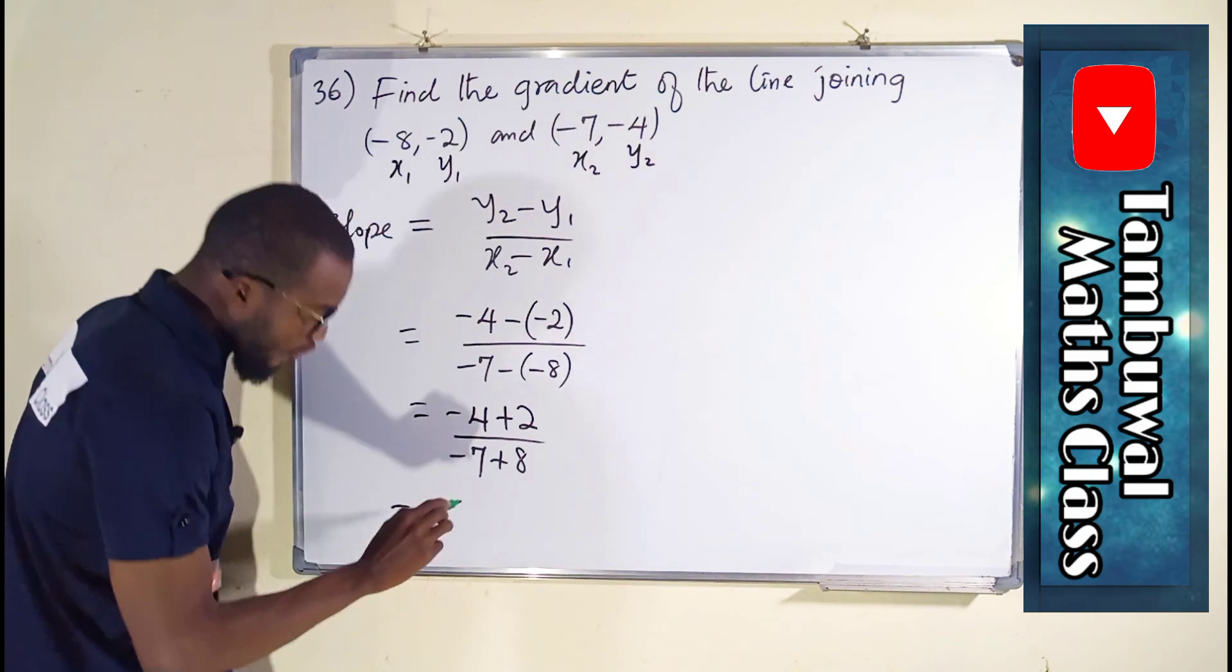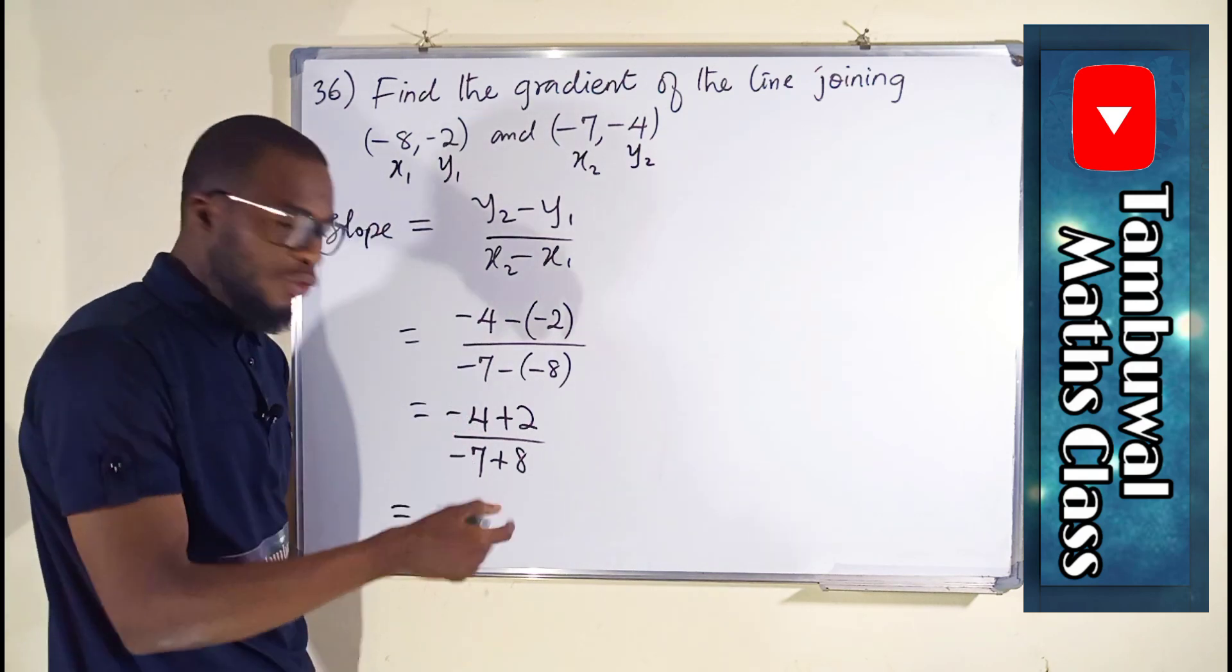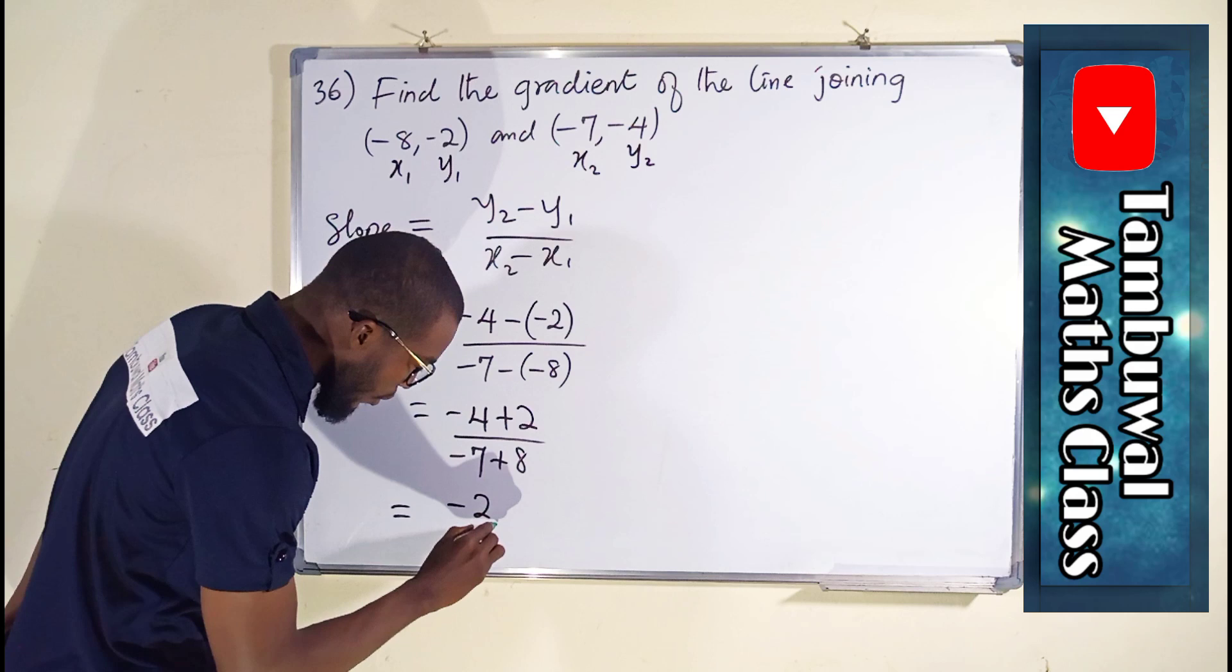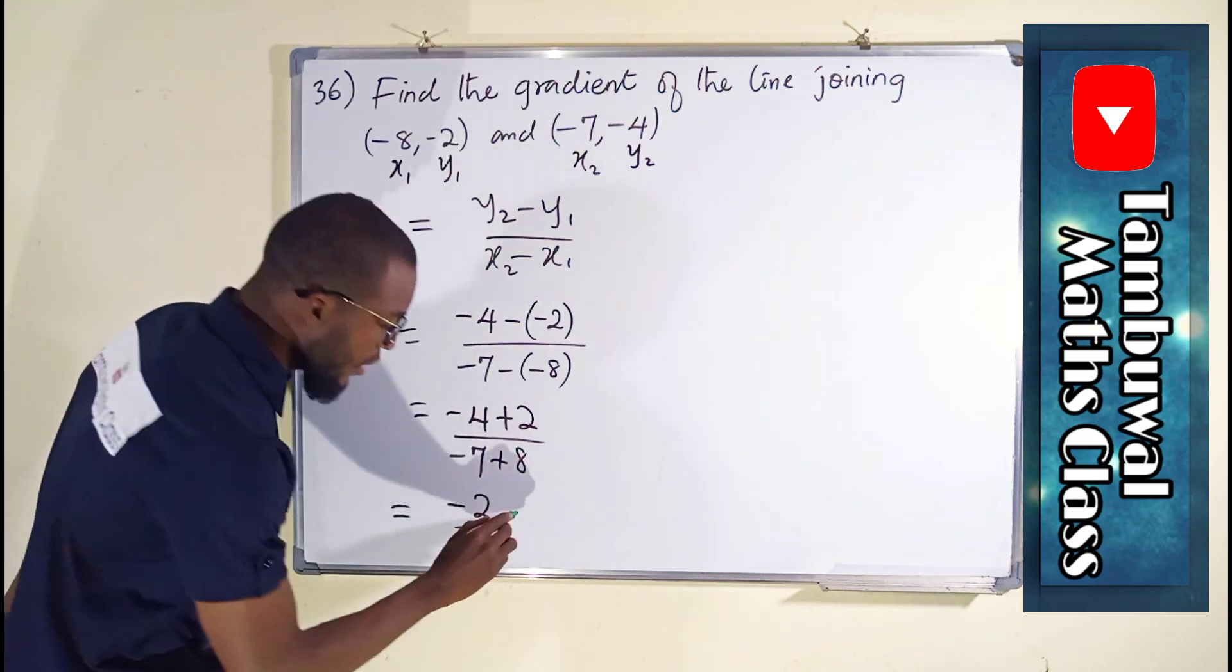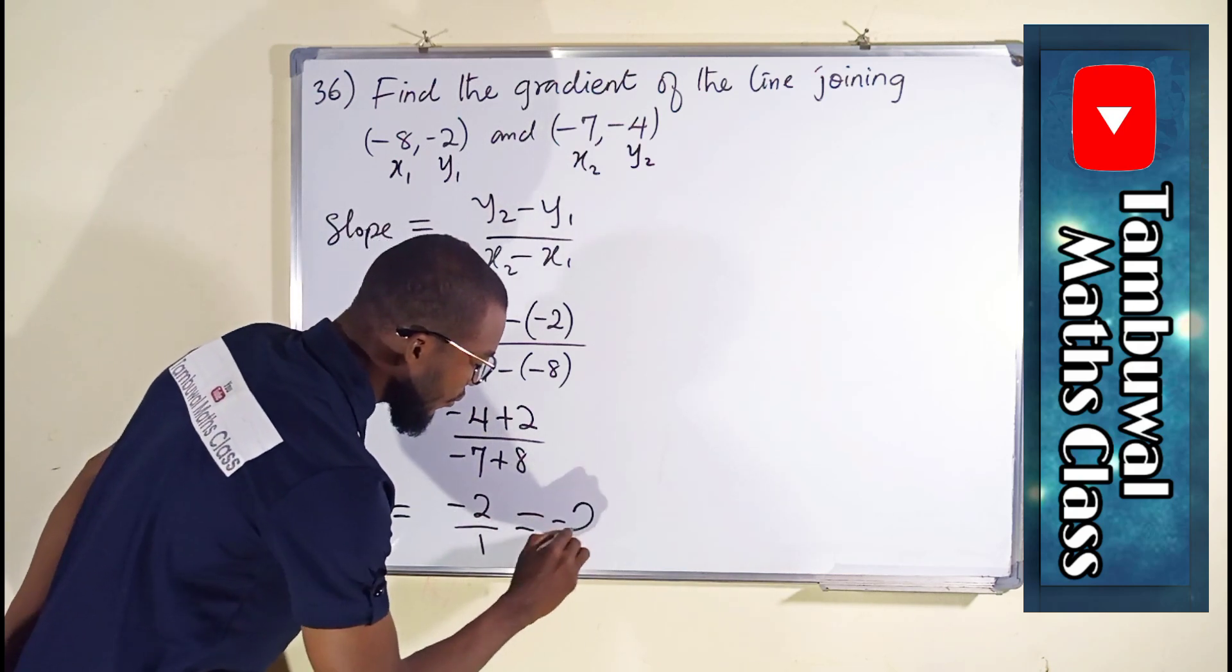This is equal to minus 4 plus 2 is minus 2, over minus 7 plus 8 is plus 1. And you can see this is equal to negative 2.